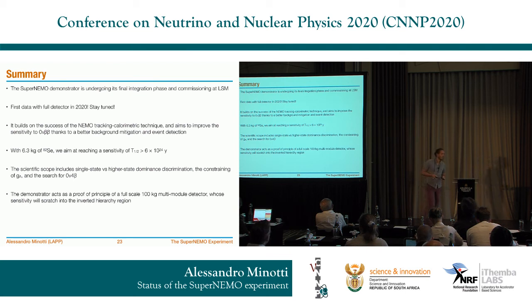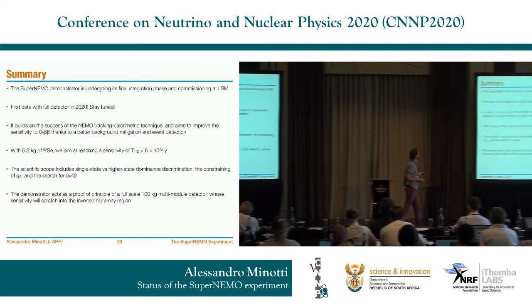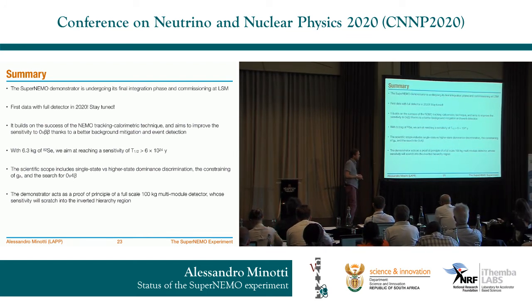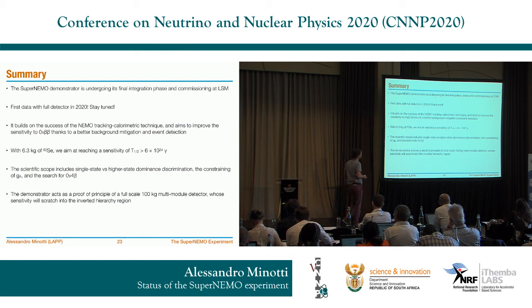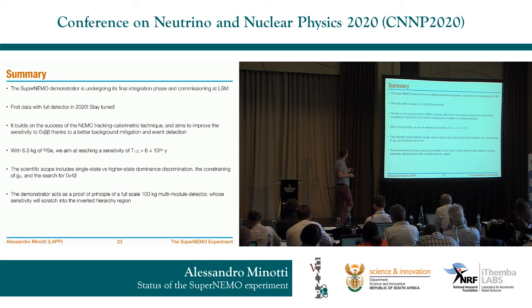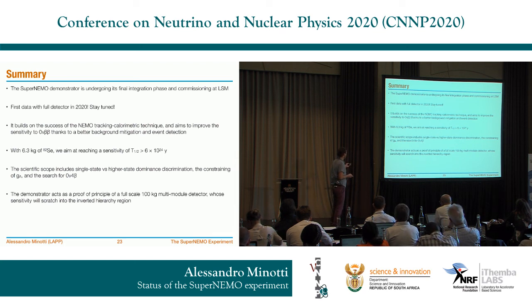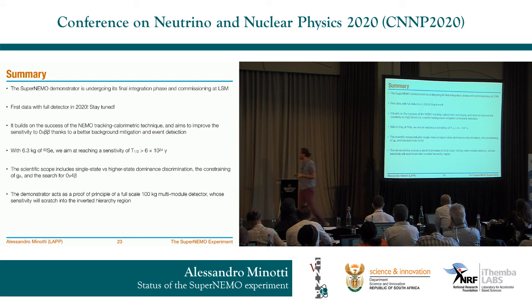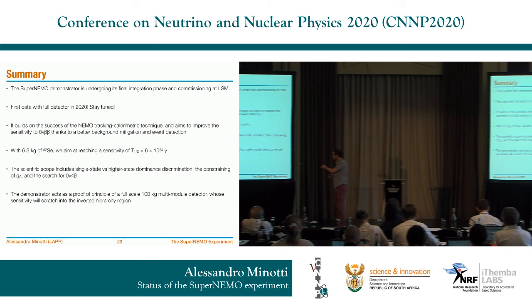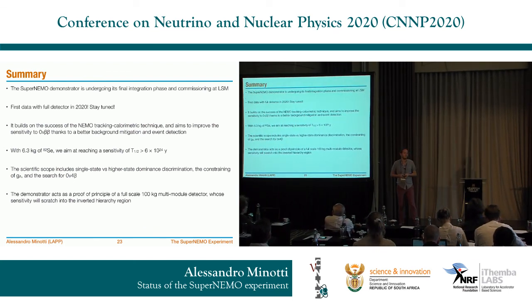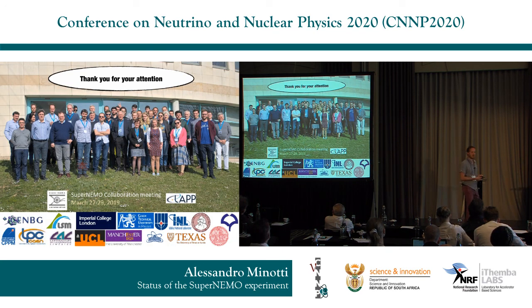To summarize: the SuperNEMO demonstrator commissioning is ongoing, taking calorimeter data since one year ago, with full data taking starting in 2020 — stay tuned. It builds on the technology of NEMO3, with improvements in detection technique, background mitigation, and radon reduction in the gas. With 6.3 kg of selenium-82, we aim to reach sensitivity of the order of 6×10²⁴ years. The scientific scope includes also SSD vs HSD discrimination, constraining gA, and searches for exotic interactions. This demonstrator acts as a proof of principle to show we can improve on NEMO3 technology and eventually build a 100 kg detector to scratch into the inverted hierarchy region. Thank you very much for your attention.